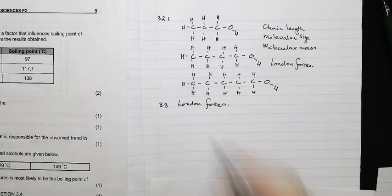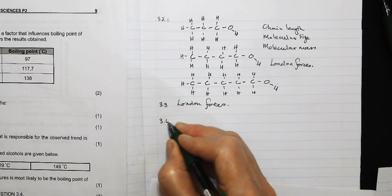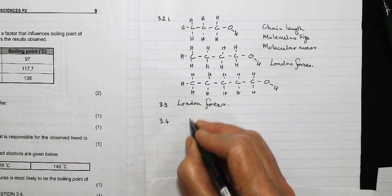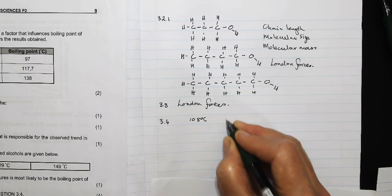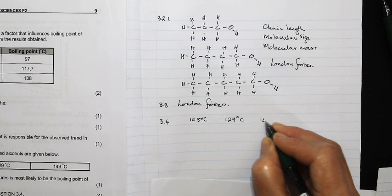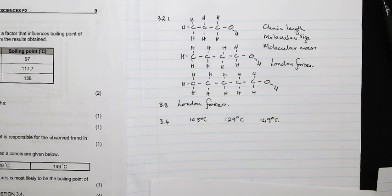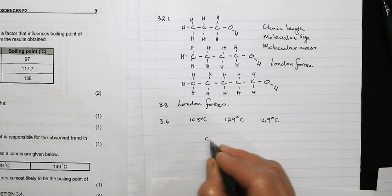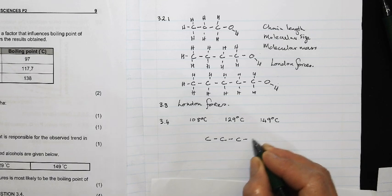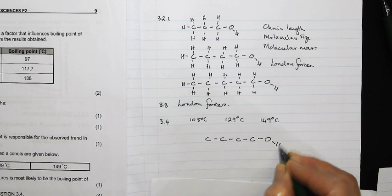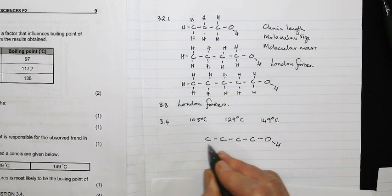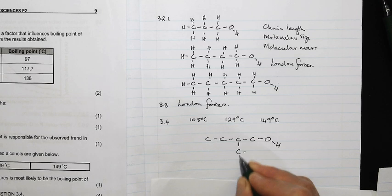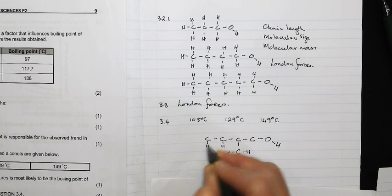Then question 3.4 gives us three boiling points: 108 degrees Celsius, 129 degrees Celsius, and 149 degrees Celsius. They ask which one of the three temperatures is most likely to be the boiling point of 2-methyl-butan-1-ol. So to answer this question, let's draw out the structural formula for 2-methyl-1-butanol. This is butan-1-ol, and 2-methyl means the methyl group is on the second carbon away from the carbon with the hydroxyl group.